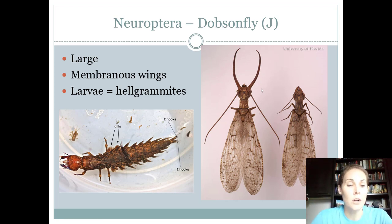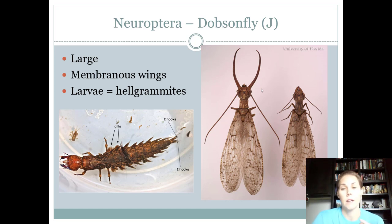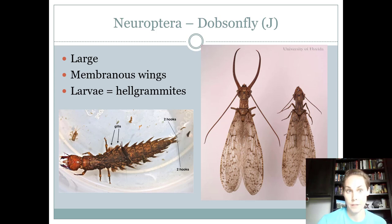The larvae are called hellgrammites. We use them for fishing, and they're also an indicator of good water quality. So: beneficial insect, very large, found around water. The host is going to be a stream, chewing mouthparts, complete life cycle.